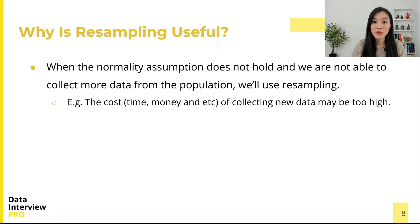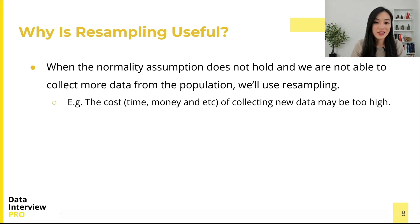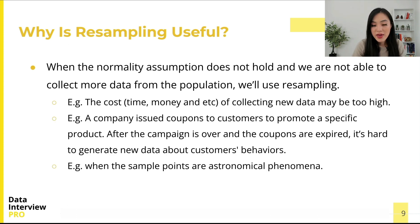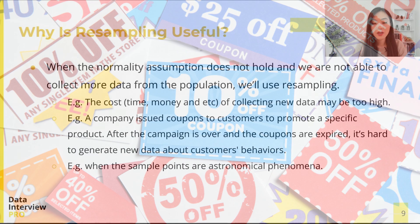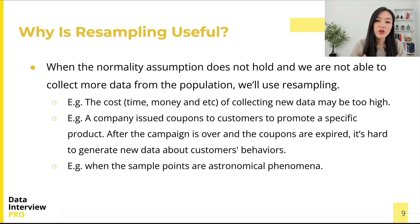When the normality assumption does not hold and we are not able to collect more data from the population, we use resampling. For instance, data collected by running an experiment may be too costly in time and money to reproduce. In a marketing campaign, for example, a company issues coupons to customers — once the campaign is over and coupons expire, it's hard to generate new data points about customer behavior.